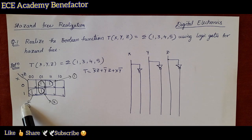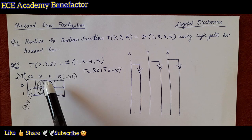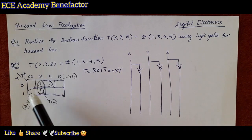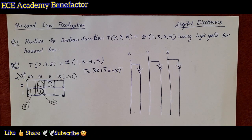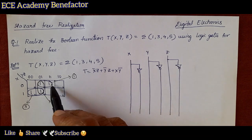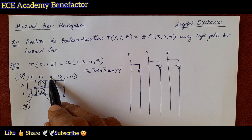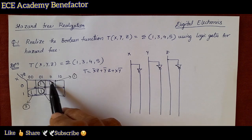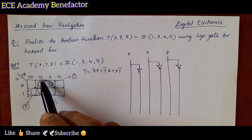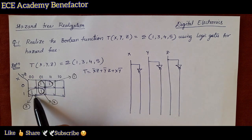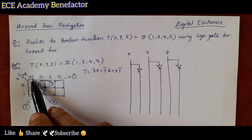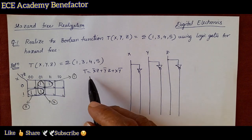This is one pair, and to make it hazard-free we need to do overlapping. In general, this is one pair and that is the other pair, but to make it hazard-free we need to overlap these two as well. Now we have three terms: for the first term it is x̄y, for the second term it is x̄z, for the third term it is ȳz, and for the overlapping term it is xȳ. So we got the Boolean expression.